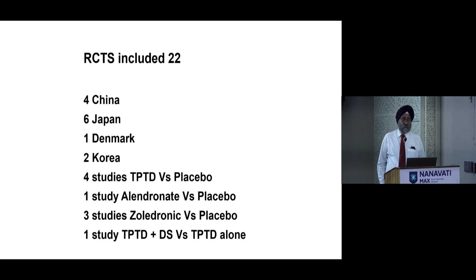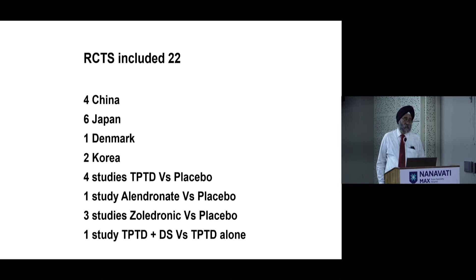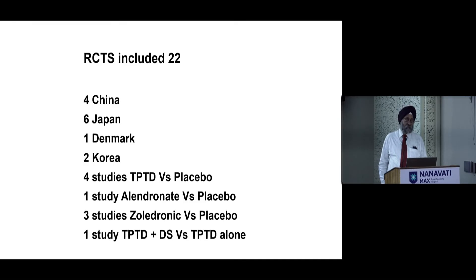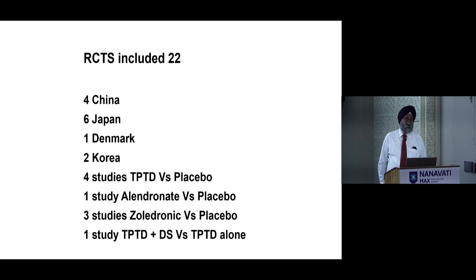The RCTs included approximately 22 from China, six from Japan, and one from Denmark — an international analysis not limited to one country. Studies included four with teriparatide, one with alendronate, three with zoledronic acid, and one with teriparatide plus denosumab.